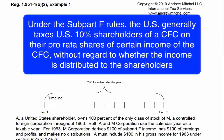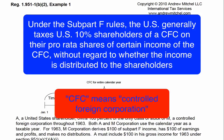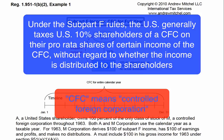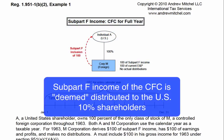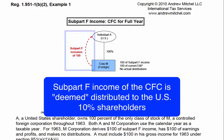Under the subpart F rules, the U.S. generally taxes U.S. 10% shareholders of a CFC on their pro-rata shares of certain income of the CFC, without regard to whether the income is distributed to the shareholders. Thus, subpart F income of the CFC is deemed distributed to the U.S. 10% shareholders.